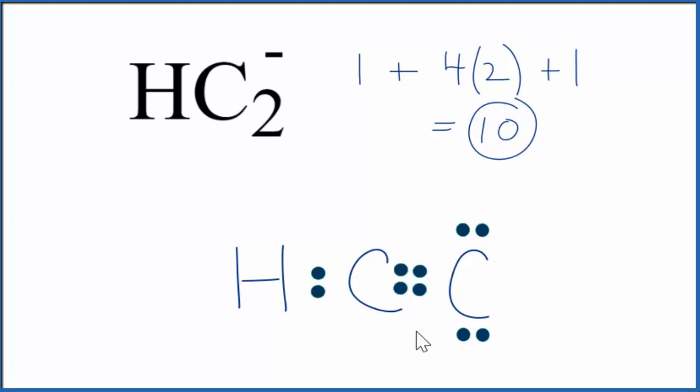This carbon now has eight and this carbon has six. So we're getting close. Let's move another pair to the middle. So now we have a triple bond and I'd like to put this one up here. Looks nicer.